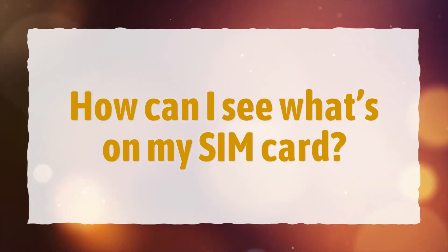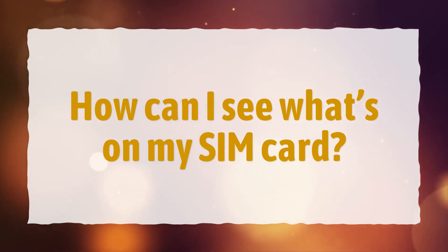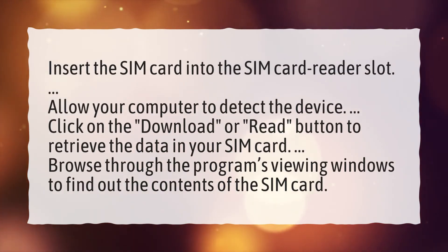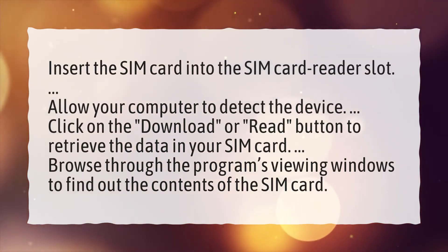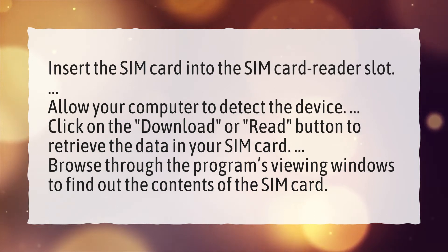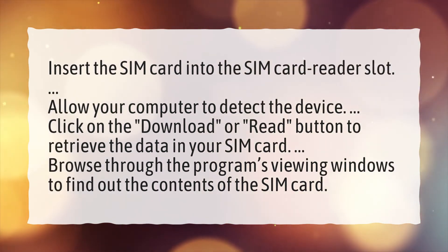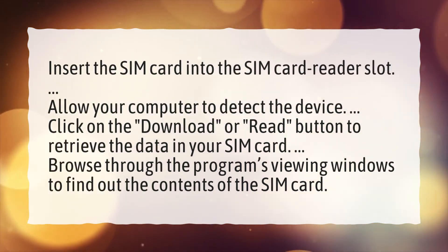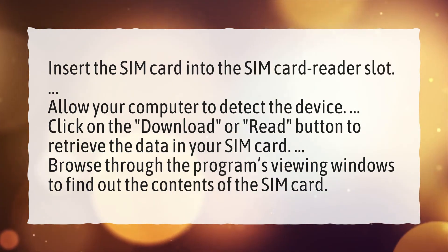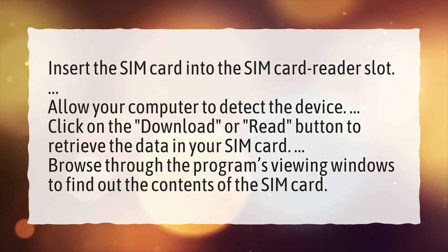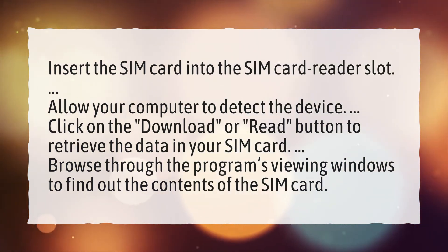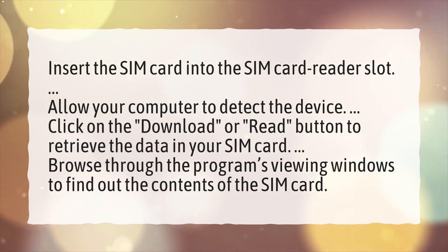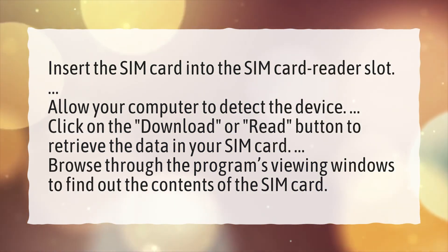How can I see what's on my SIM card? Insert the SIM card into the SIM card reader slot. Allow your computer to detect the device. Click on the Download or Read button to retrieve the data in your SIM card. Browse through the program's viewing windows to find out the contents of the SIM card.